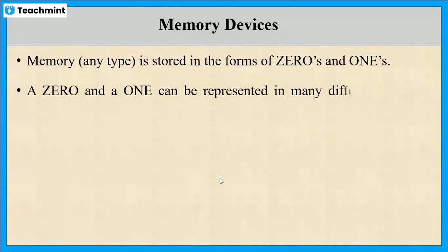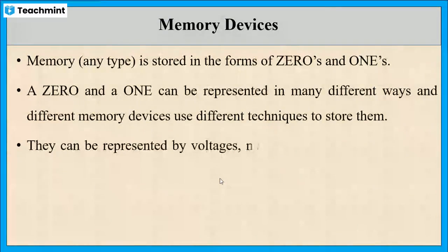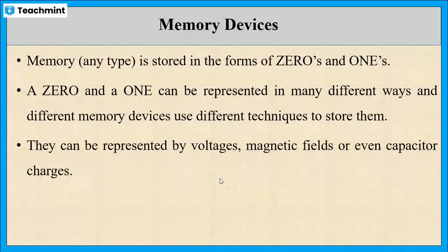A zero and a one can be represented in many different ways. To do that, different techniques have been used by different memory devices. They may be represented by voltages, magnetic fields, or even capacitor charges.